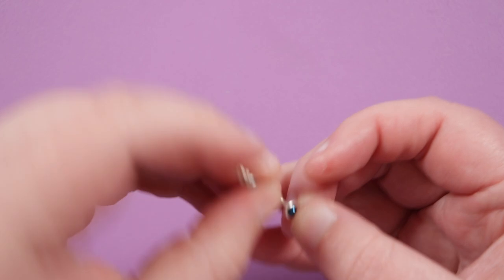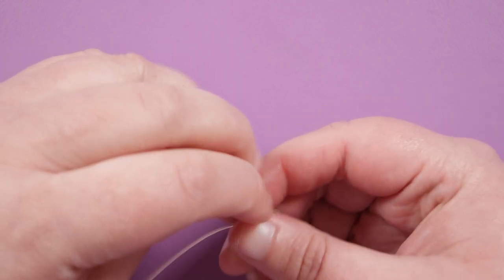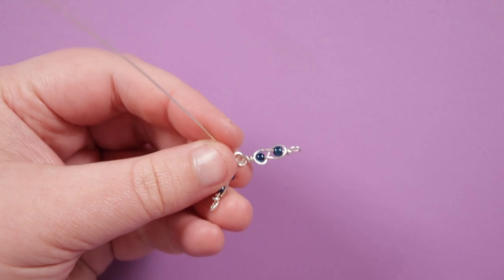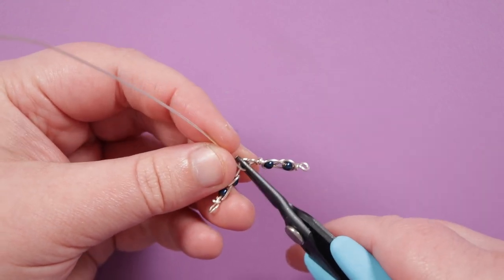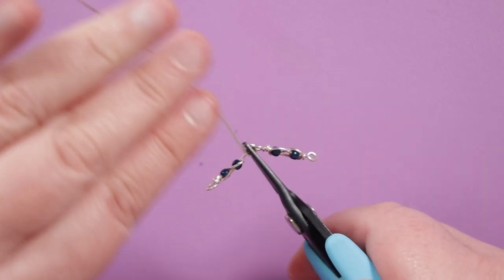To then sit and obviously check if it's sitting correctly and they are then I want to just grab my pliers again to grab onto the loop so we can just finish off the wrap loop by wrapping a couple of times around that gap that we left.